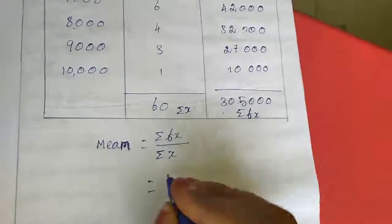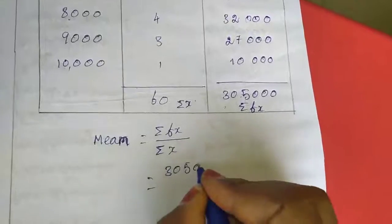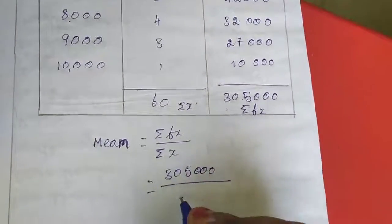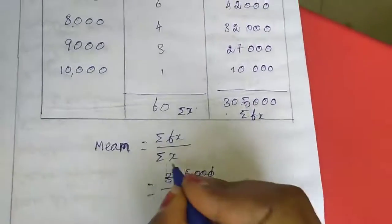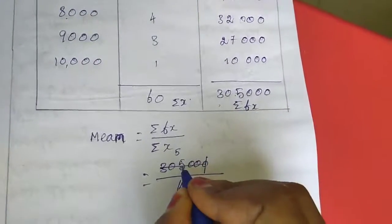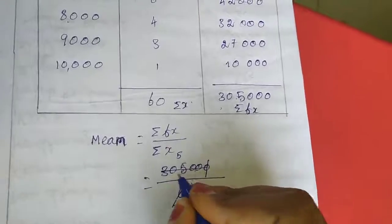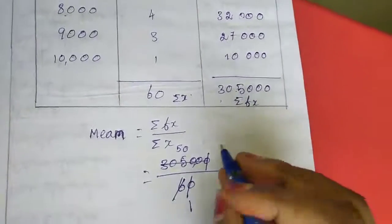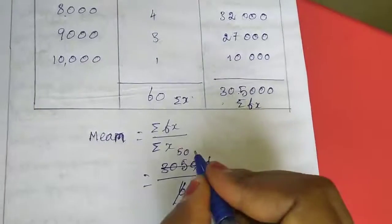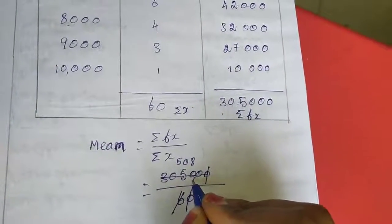Now I am going to substitute in the formula, so 385,000 divided by 60. 1 zero, 1 zero is cancelled. 1 into 6 is 6. 5, 6 are 35. So it will not become, so zero I added. Again 50. 6 sixes are 37, 6 are 42, 8. 6 are 48. Again 8, 6 are 48.